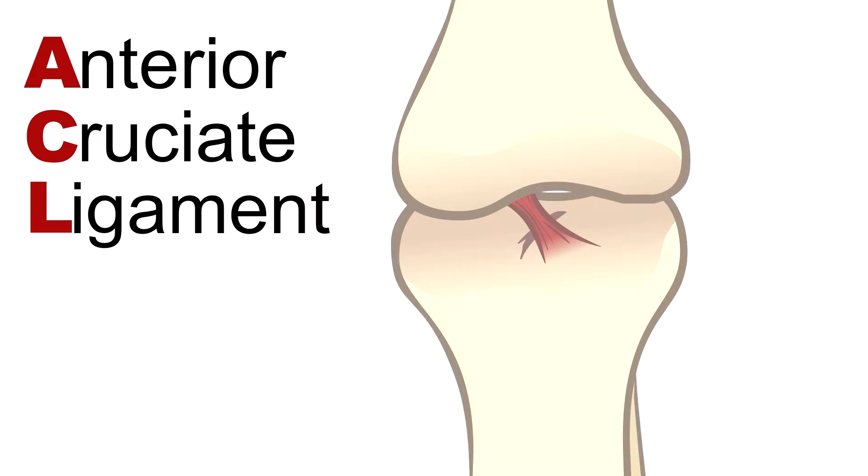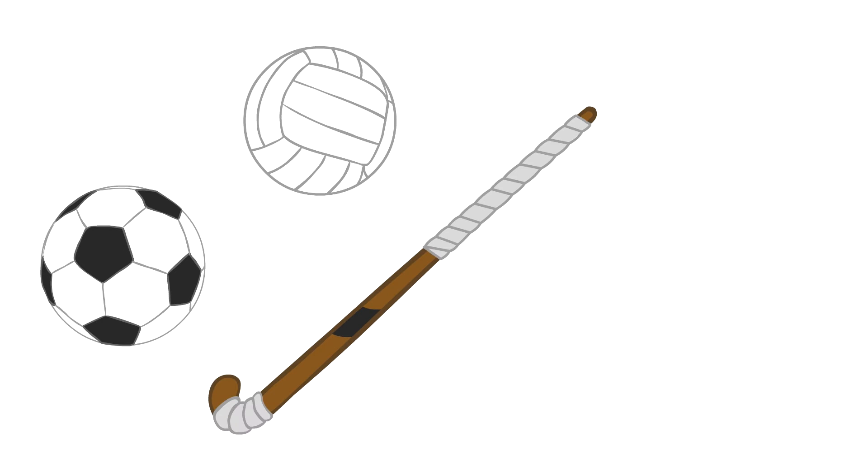The anterior cruciate ligament, also known as the ACL, is an important stabilizer in the knee that helps us withstand the cutting forces of our favorite sports, like soccer, volleyball, field hockey, or tennis.